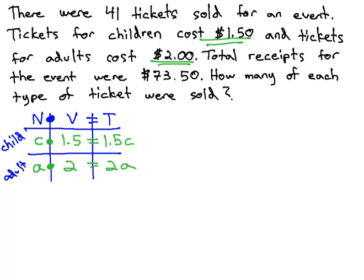In this problem, we're also given some totals. There are 41 tickets that were sold. This is the number of tickets. This is the total if we were to add up the number column. Children plus adults is 41.